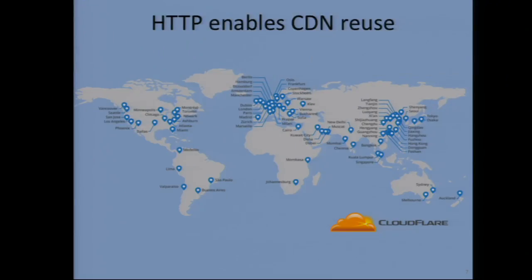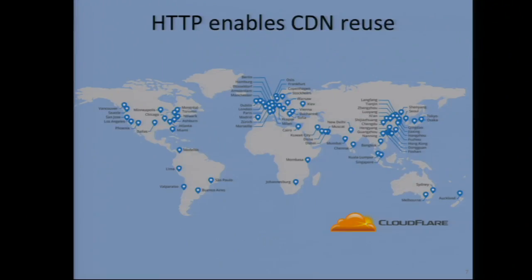One of the key motivators behind this approach is that it allows us to reuse the entire ecosystem we built for the web. If there's a web proxy near the client side, it can transparently cache the content and reduce transfers from upstream. Similarly, you could use many existing CDNs and just treat these as static files — Cloudflare, Limelight, Akamai, Level 3, et cetera.